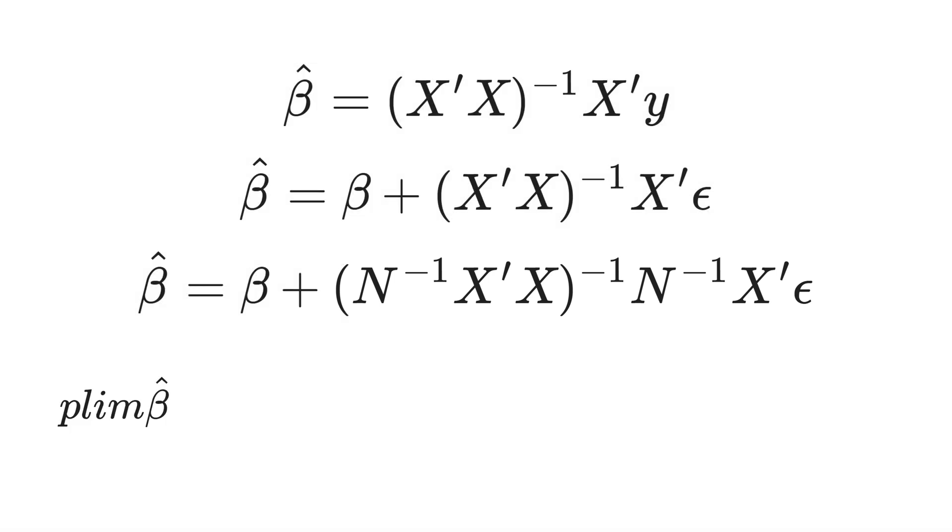Now, let's calculate the probability limit of beta hat. That means, what happens when the number of observations goes to infinite.